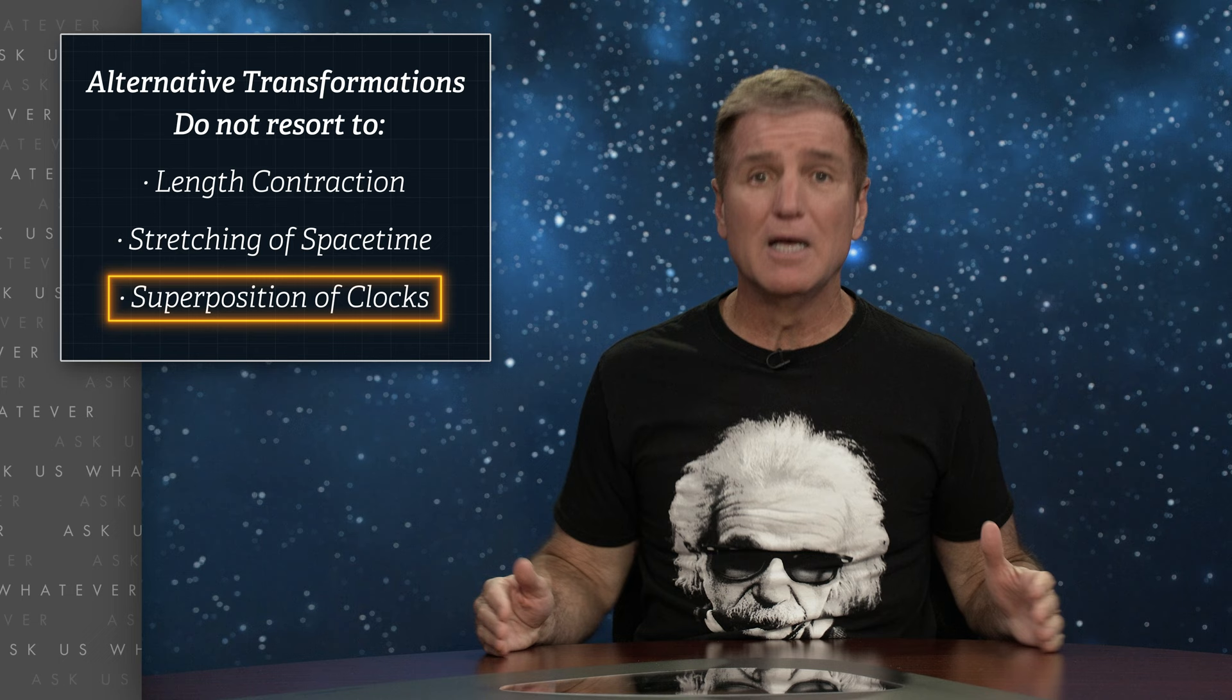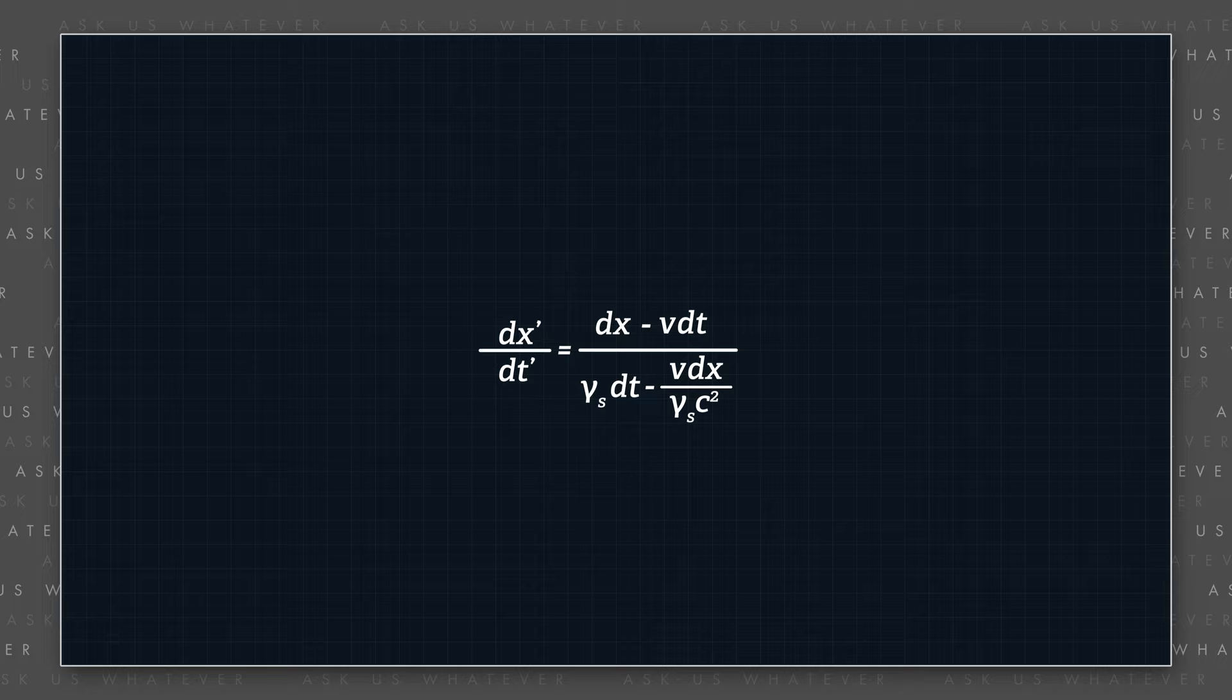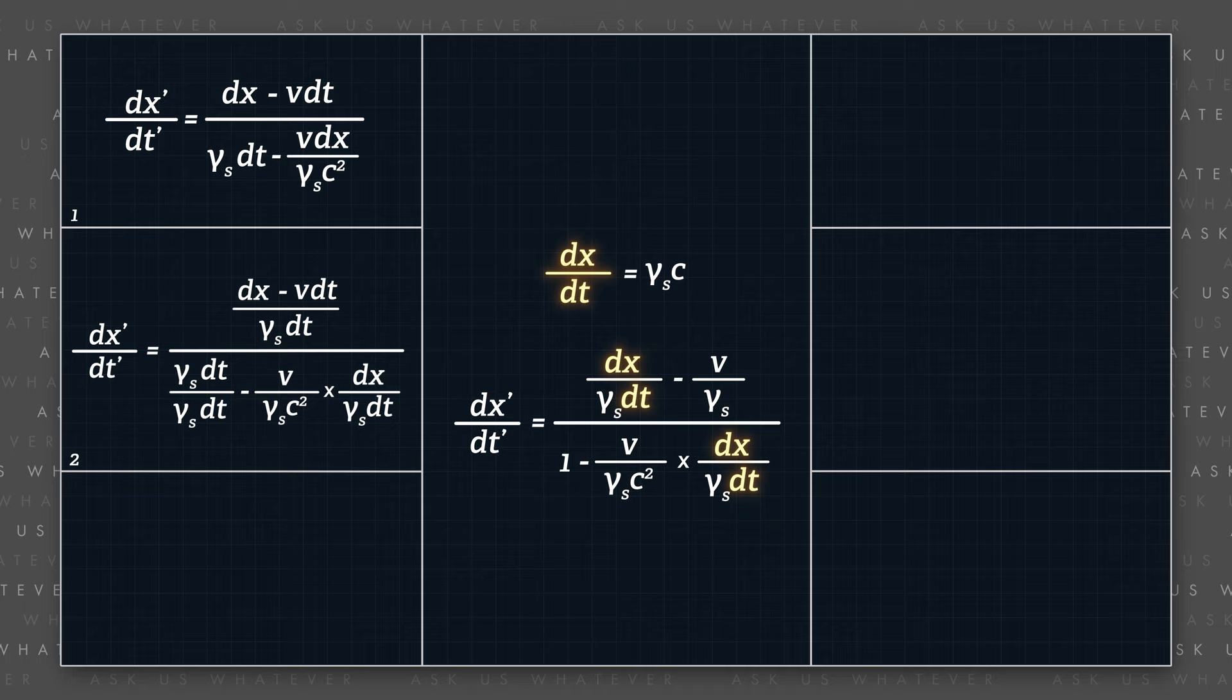Now when we introduce the possibility of variable light speed in episode 6, a number of critics raise their swords in anger. Well, I want to show you something magical about the alternative transformations. Let's compute the speed of light in the s prime frame, dx prime dt prime, by taking the ratio of the two transformations. Let's divide the top and bottom of the right-hand ratio by gamma s times dt, and then substitute our speed of light, as seen from the stationary frame, gamma s times c, for dx dt.